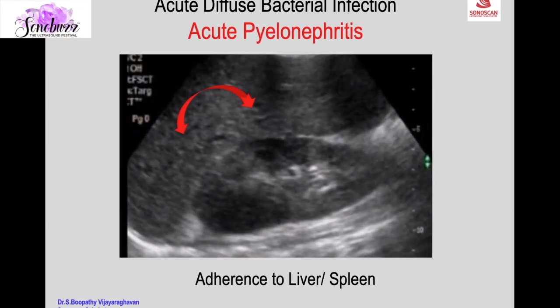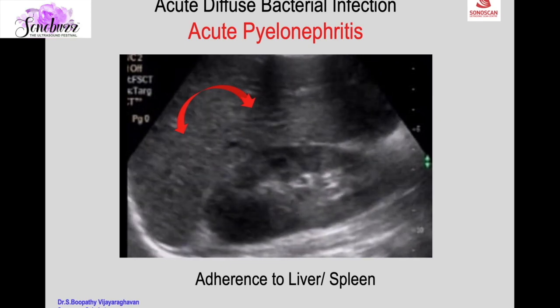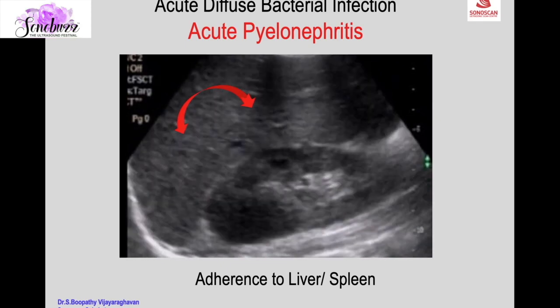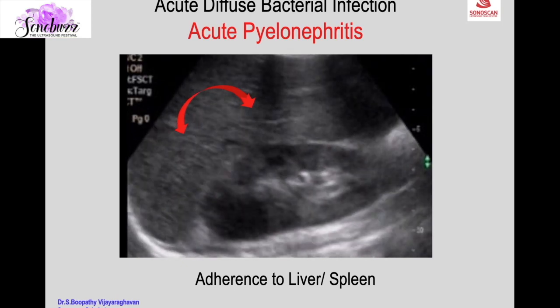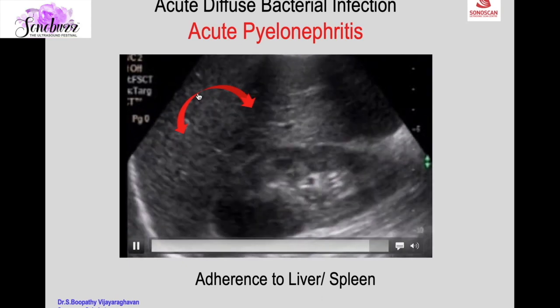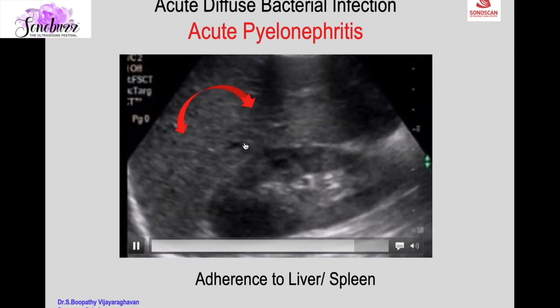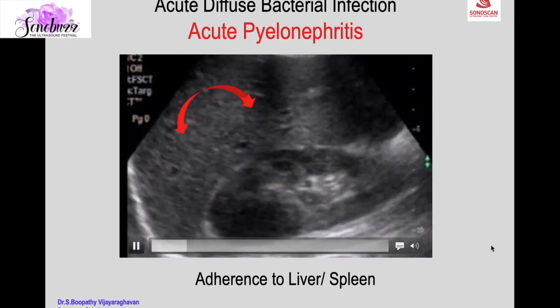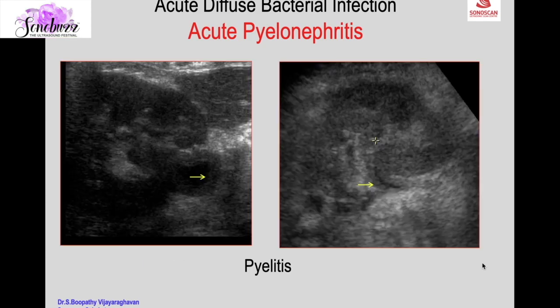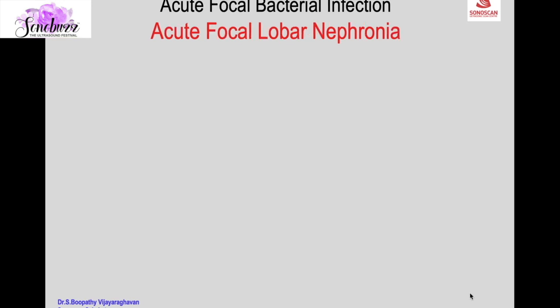There may be adherence of adjacent organs, either liver or spleen, to the kidney showing acute pyelonephritis. Parking movement of the liver over the kidney is seen because the liver is adherent to the right kidney, while the rest of the liver moves around. The pyelitis component of acute pyelonephritis can be seen as urothelial thickening in the calyces and pelvis.